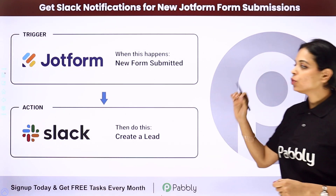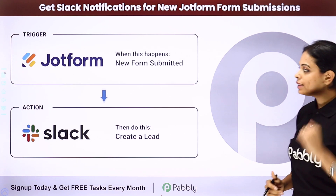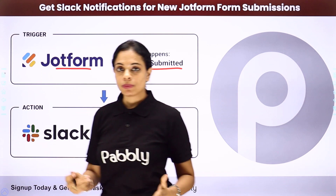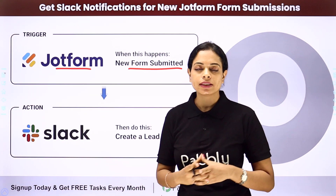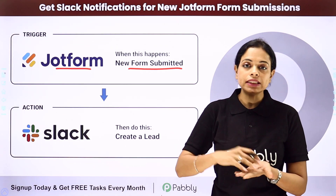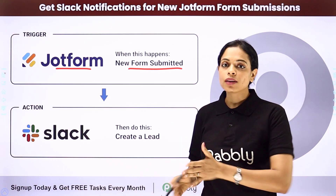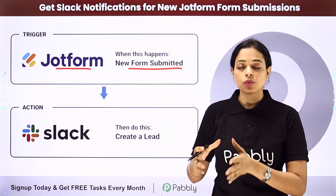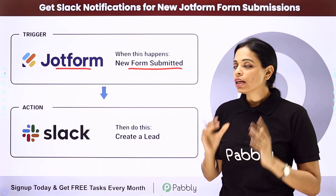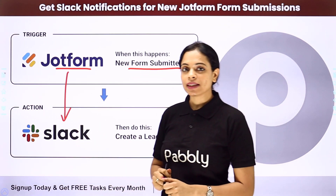In this video, we are going to see how to get Slack notifications for new JotForm submissions. Every time a new form is submitted — here we have used JotForm, which is a form builder application, though you can use any other form builder as well — so the form is submitted, let's say it's a contact form, and you have received the details of the user. Now you want to send those details to your team on Slack, which is a social messaging service, so they can follow up later. For this, you will have to integrate the two applications, and this can be done using Pabbly Connect software.